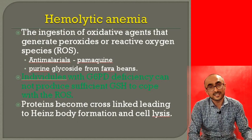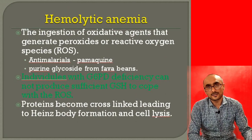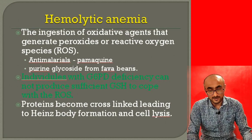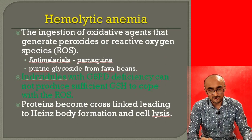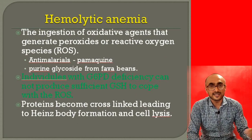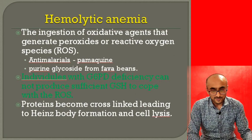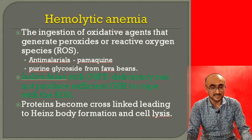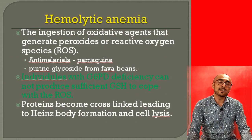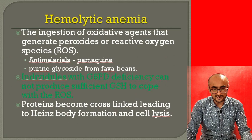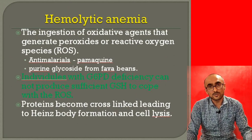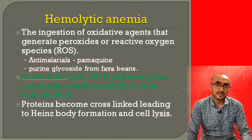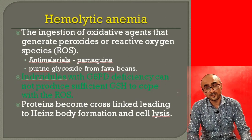Hemolytic anemia occurs upon ingestion of oxidative agents that generate reactive oxygen species — for example, anti-malarial drugs like primaquine, or even fava beans, which contain a compound called purine glycoside. Ingestion of such drugs or fava beans can lead to high reactive oxygen species in the cell. In individuals with glucose-6-phosphate dehydrogenase deficiency, this leads to protein cross-linking in RBCs, eventual cell lysis, and hemolytic anemia.